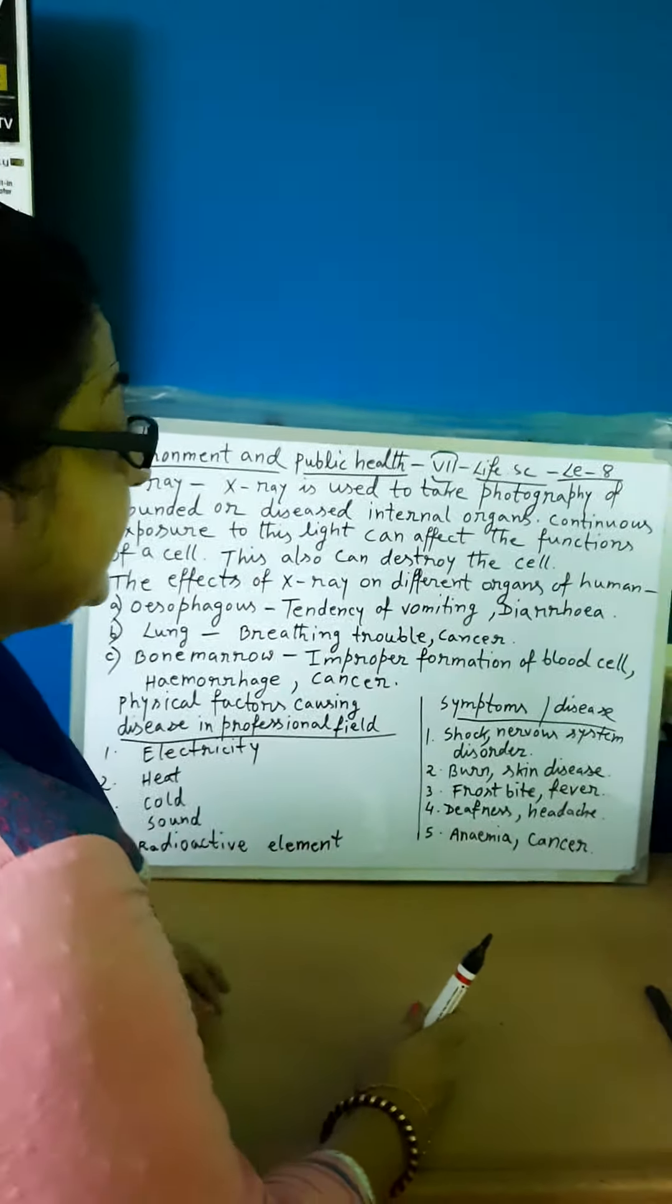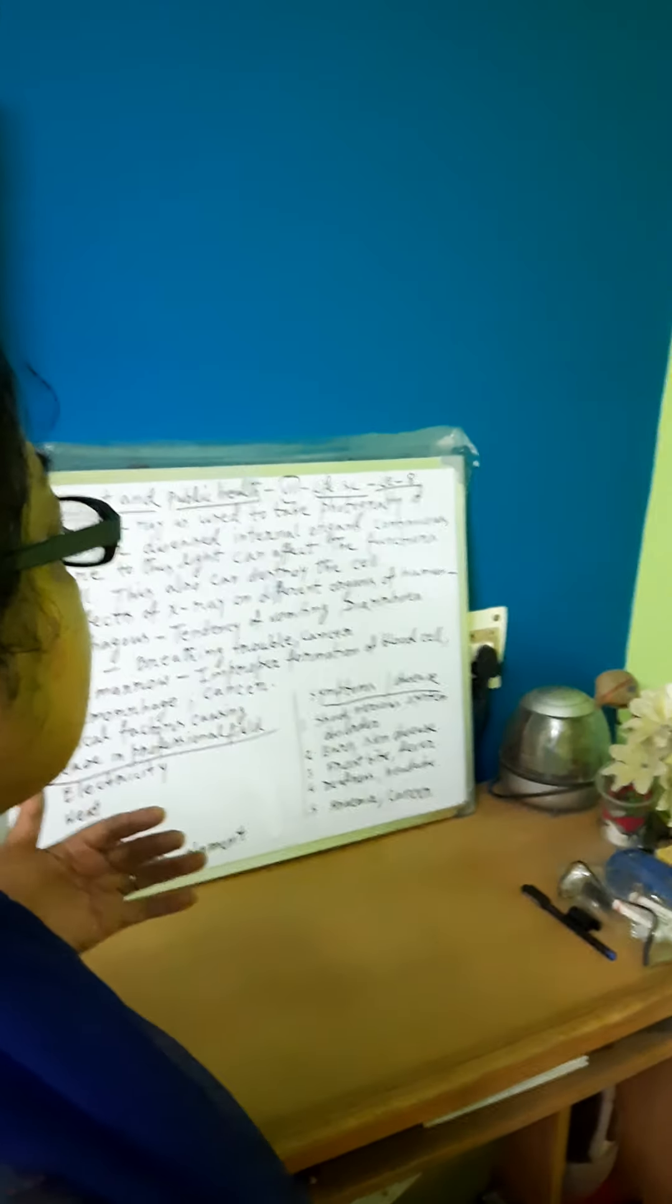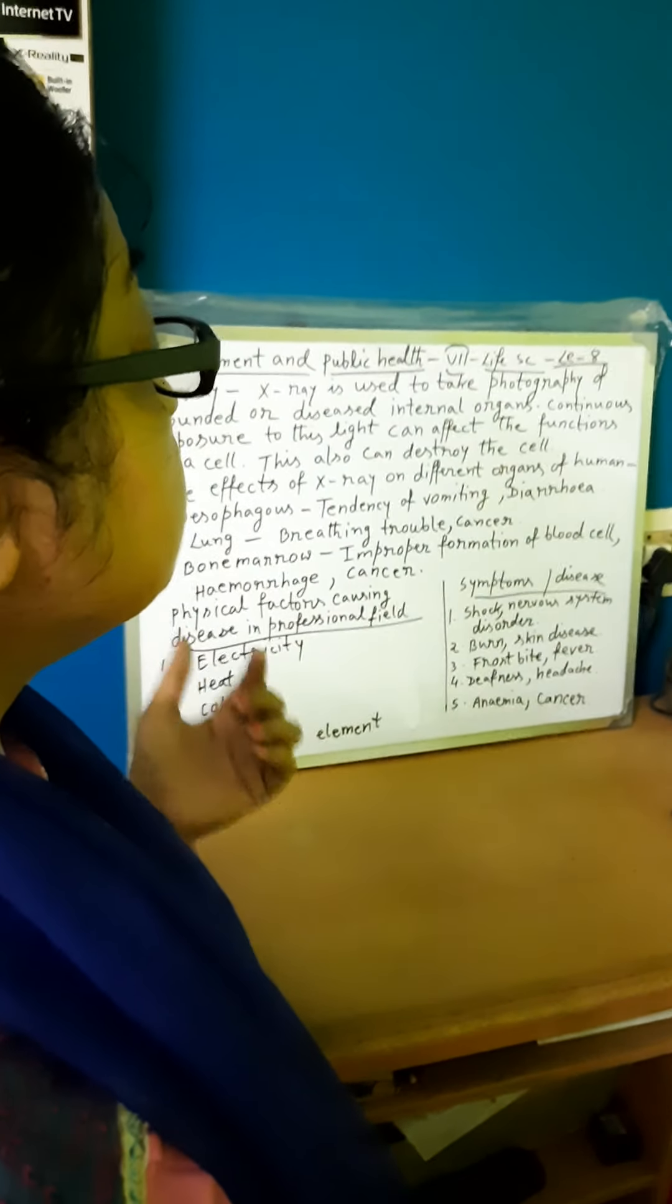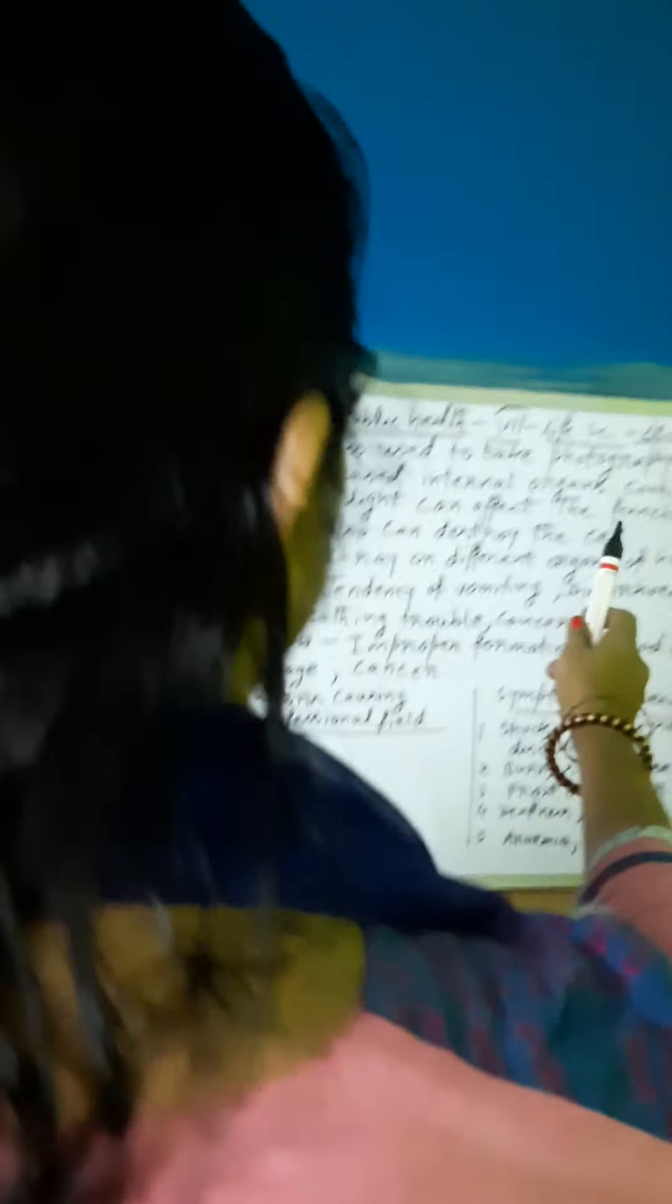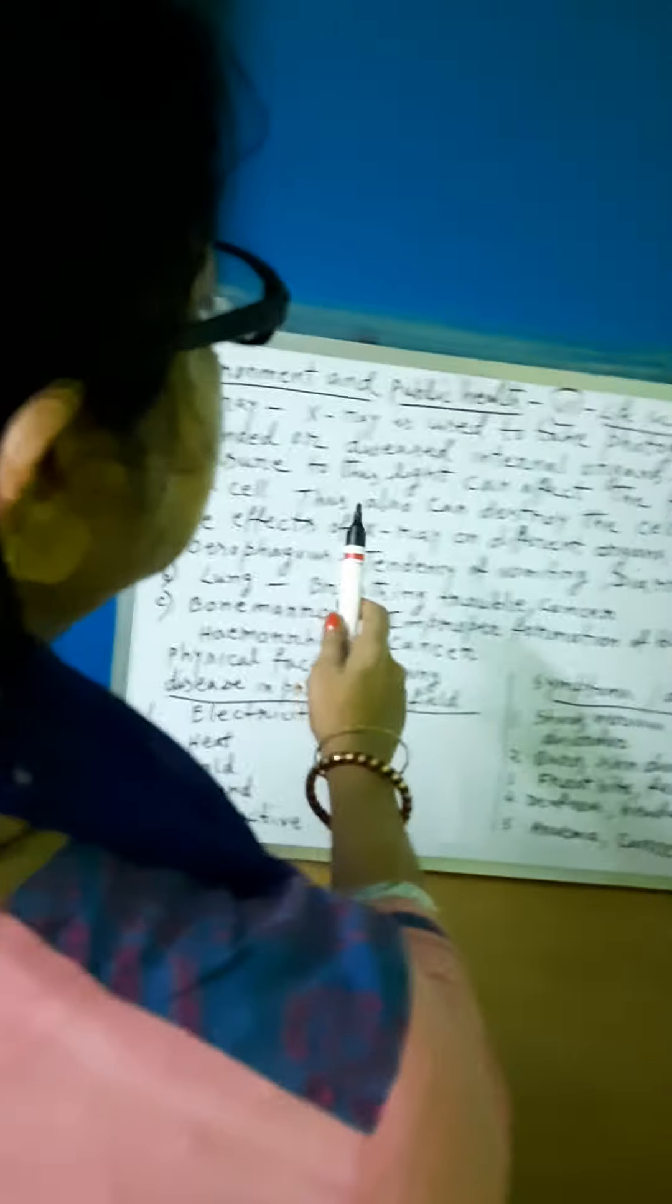Now X-ray. What do you mean by X-ray? X-ray is used to take photographs of wounded or diseased internal organs - internal organs which means that the organs are not visible from the outside.